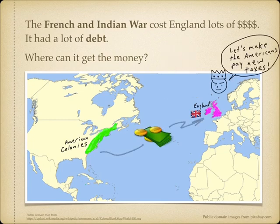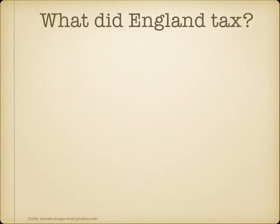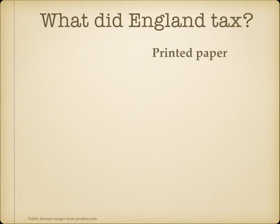The government said let's make the Americans pay new taxes. Taxes are what the money is called that the people give to the government to pay for things the government needs. What kind of things did England collect tax on? It was printed paper.